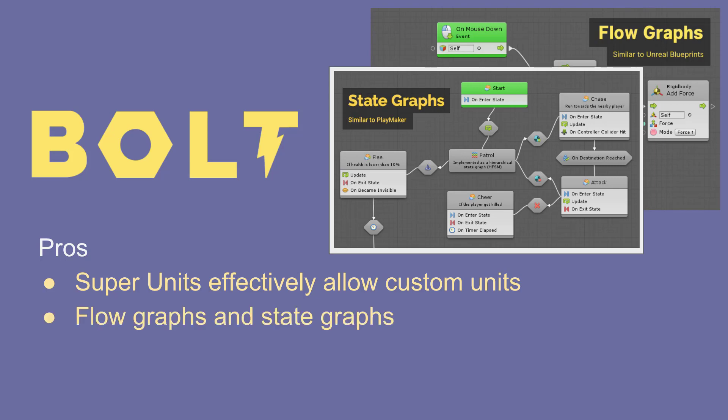Bolt allows flow graphs, which is what they first started with — the more typical approach of creating individual actions. They've also recently added state graphs to mimic the idea of Playmaker's finite state machines, allowing code that needs to be in particular states to use a state graph, where inside each state are additional flow graphs.